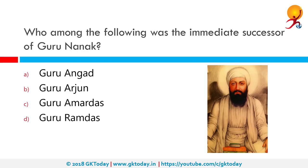Who among the following was the immediate successor of Guru Nanak? The correct answer is Guru Angad. Guru Angad was the second of the 10 Sikh Gurus. He was born in a Hindu family with the birth name Lena in the village of Harike in the north-west Indian subcontinent.